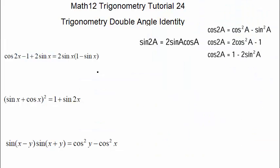Hello everyone, welcome to Jinghua Education. I'm Steven. In this video we're going to talk about Math 12 Trigonometry Part 24, which is trigonometry double angle identities. Parts 21, 22, 23, and 24 are in one unit, so please make sure you watch all of them.